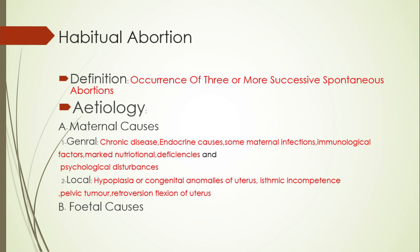Other causes include high amputation of the cervix. In isthmic incompetence, habitual abortion occurs in a specific and characteristic manner, and usually we reach most of the diagnosis from the history of the patient. It is characterized by habitual mid-trimester abortion — so abortion does not occur very early in pregnancy but in the mid-trimester.